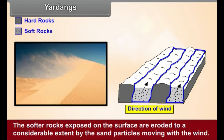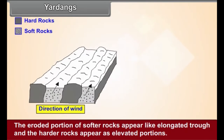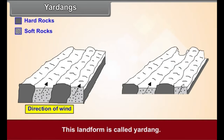Yardangs: The softer rocks exposed on the surface are eroded to a considerable extent by the sand particles moving with the wind. The harder rocks present in between are eroded to a lesser extent. The eroded portions of softer rocks appear like elongated troughs and the harder rocks appear as elevated portions. This landform is called a yardang.